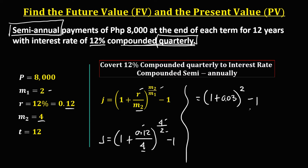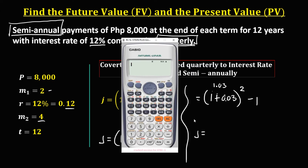Solving for J, we get 1.03 to the power of 2, minus 1.